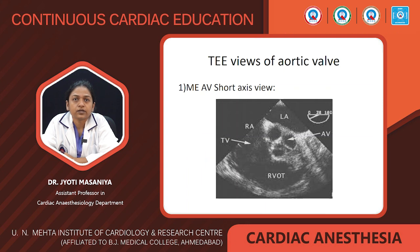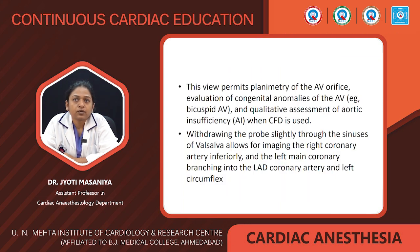Coming to the transesophageal echocardiographic views of the aortic valve: the first is the mid-esophageal aortic valve short axis view. This view is obtained by rotating the multiplane angle to 30 to 60 degrees from the mid-esophageal four-chamber view. In this view, you can see the non-coronary cusp lying superiorly along the interatrial septum, the right coronary cusp lying inferiorly, and the left coronary cusp lying to the right pointing in the direction of the left atrial appendage. This view permits planimetry of the aortic valve orifice, evaluation of congenital abnormalities such as bicuspid aortic valve, and qualitative assessment of aortic insufficiency by colour flow Doppler.